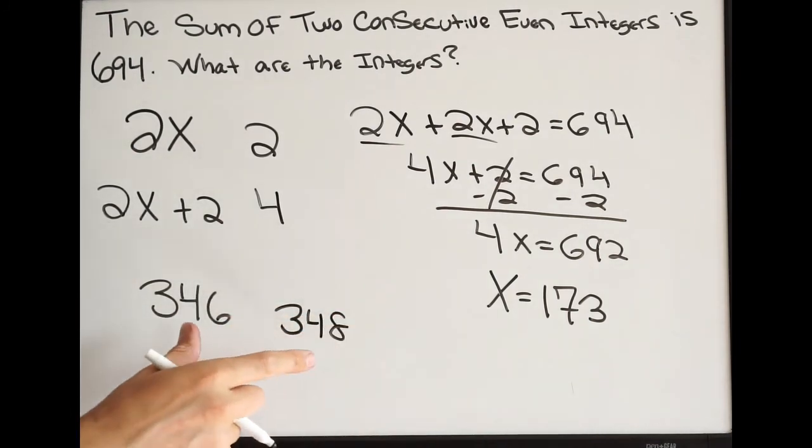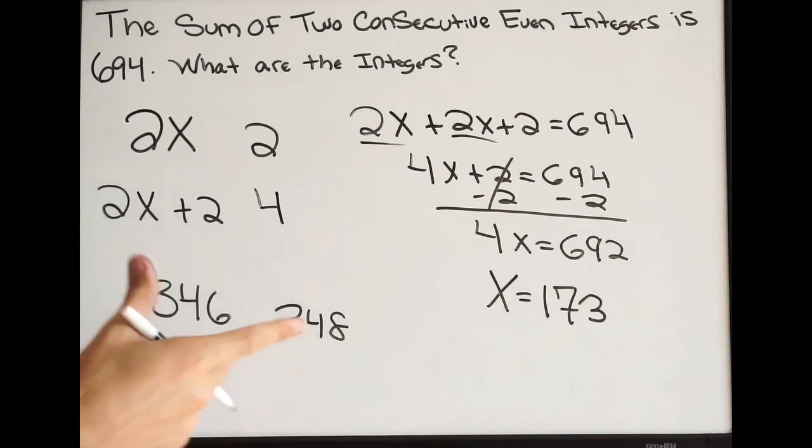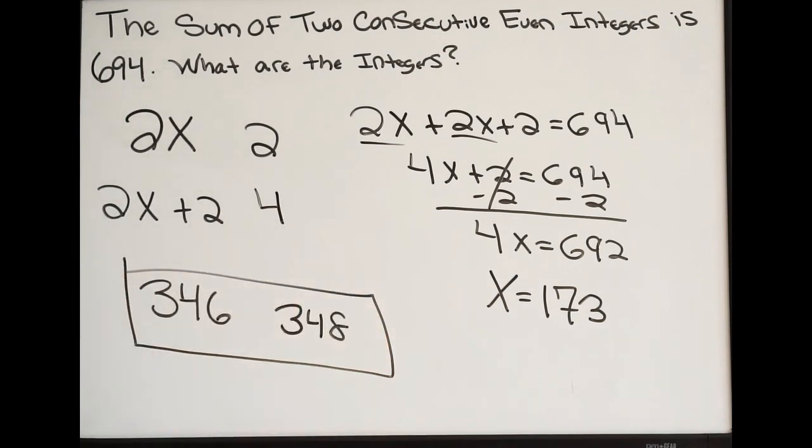So here are the two even integers. They're consecutive, and they're going to add up to 694. So this here is going to be your final answer. And that is it.